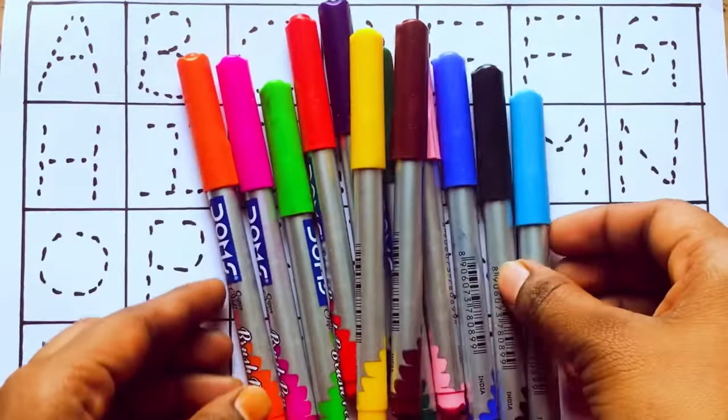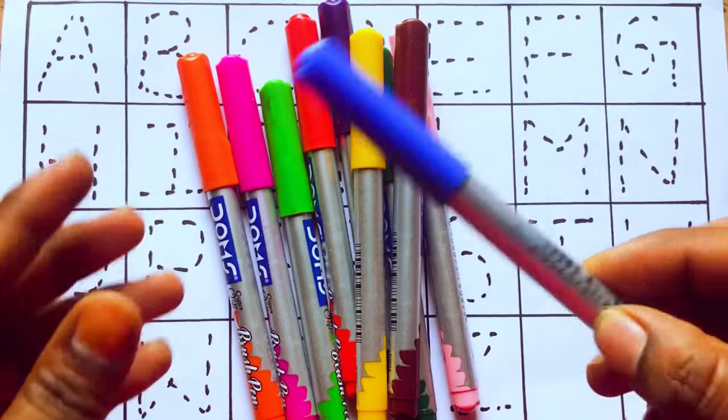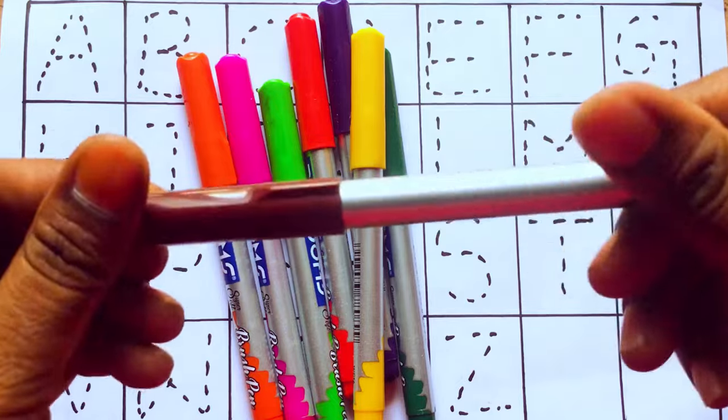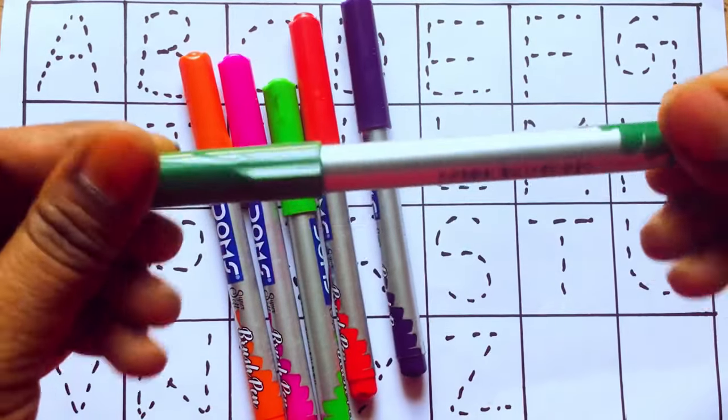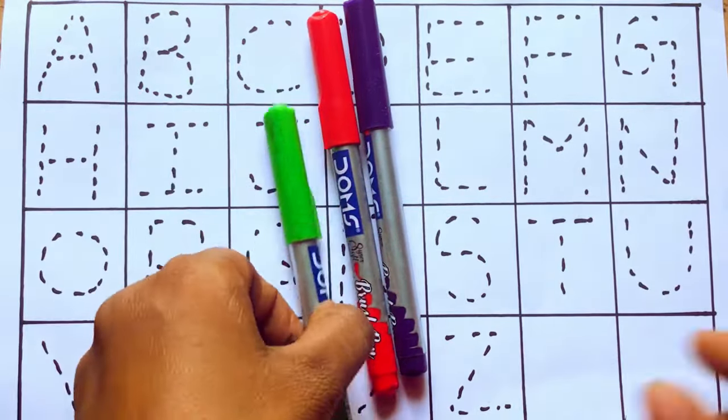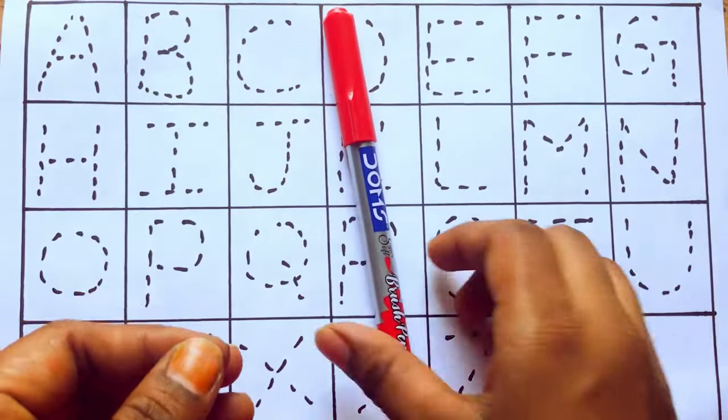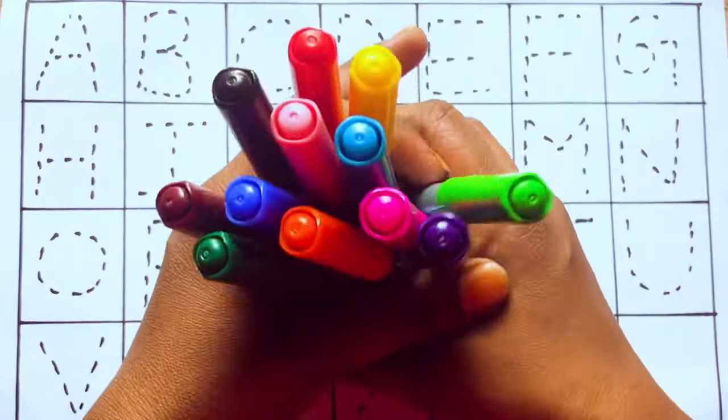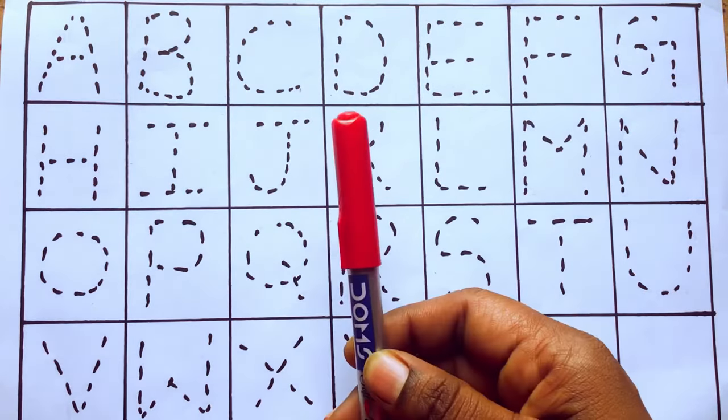Hello kids, let's learn some colors: sky blue color, black color, blue color, light pink color, brown color, yellow color, green color, orange color, pink color, green color, violet color, and red color. Okay, let's draw alphabets. Orange color.